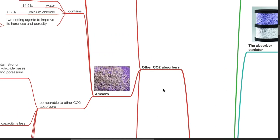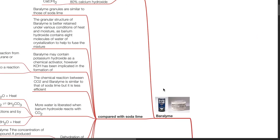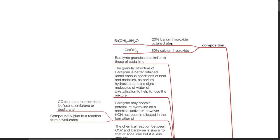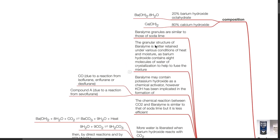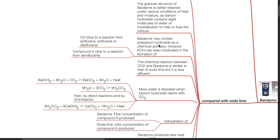Other CO2 absorbers. Baralime: composition — 20% barium hydroxide octahydrate, 80% calcium hydroxide. Compared with soda lime, baralime granules are of similar size. The granular structure of baralime is better retained under various conditions of heat and moisture, as barium hydroxide contains 8 molecules of water of crystallization to help fuse the mixture. Baralime may contain potassium hydroxide as a chemical activator; however, potassium hydroxide has been implicated in the formation of carbon monoxide from a reaction with isoflurane, enflurane, or desflurane, and compound A from a reaction with sevoflurane.